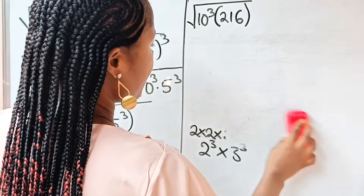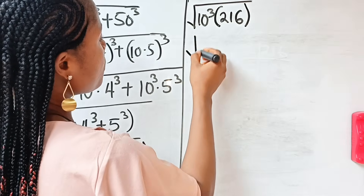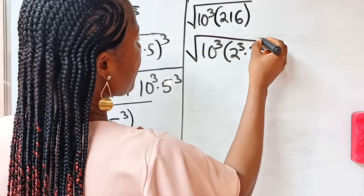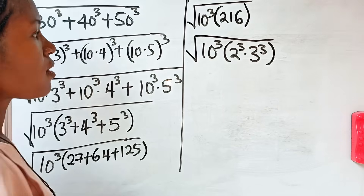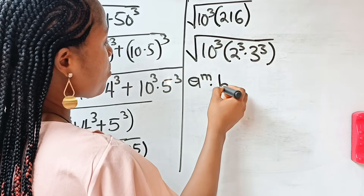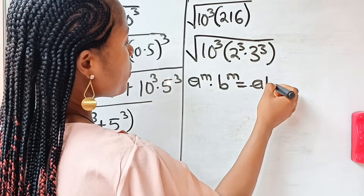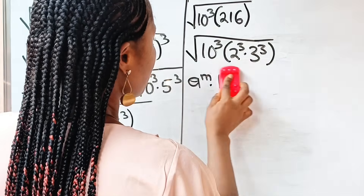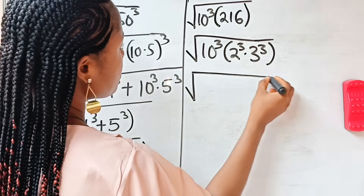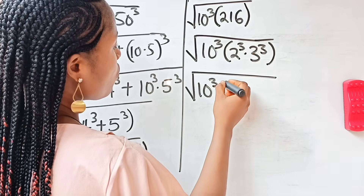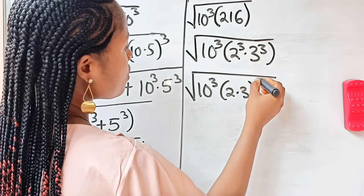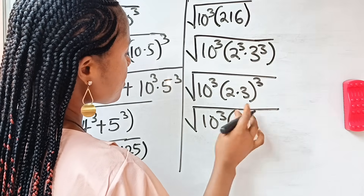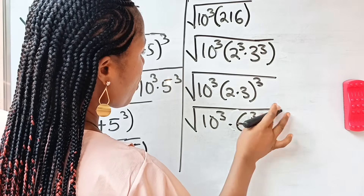So let's go ahead and write that here. This is square root of 10 to the power of 3 in brackets, times 2 to the power of 3 multiplied by 3 to the power of 3. Now remember that a to the power of m multiplied by b to the power of m is equal to a multiplied by b raised to the power of m. So we can write this as square root of 10 to the power of 3 multiplied by (2 multiplied by 3) to the power of 3, giving us square root of 10 to the power of 3 times 6 to the power of 3.